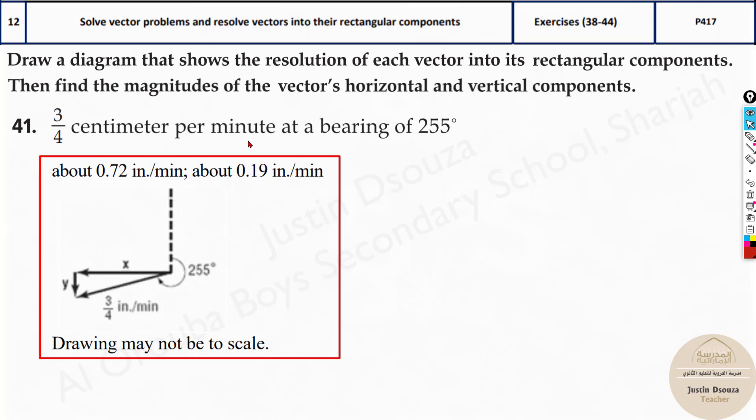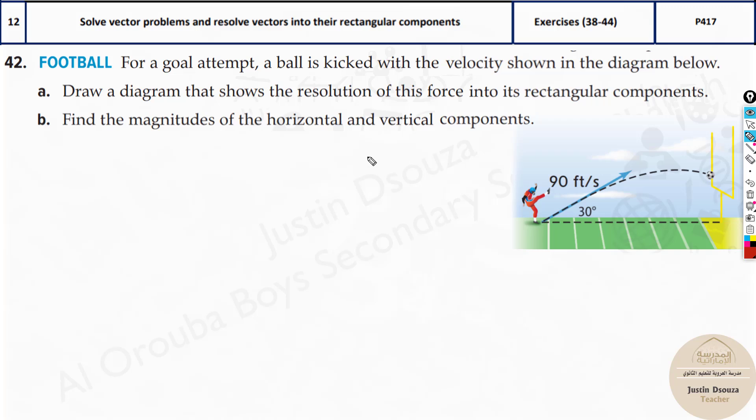Now here we have bearing of 255 degrees. They did not mention north, south or anything. If it is just bearing, if this word is mentioned, you always start from the north. So north over here, let us start 255 degrees. It will be 180. If you touch this axis, it will be 270. So somewhere over here and then draw the line. That is how we do it.